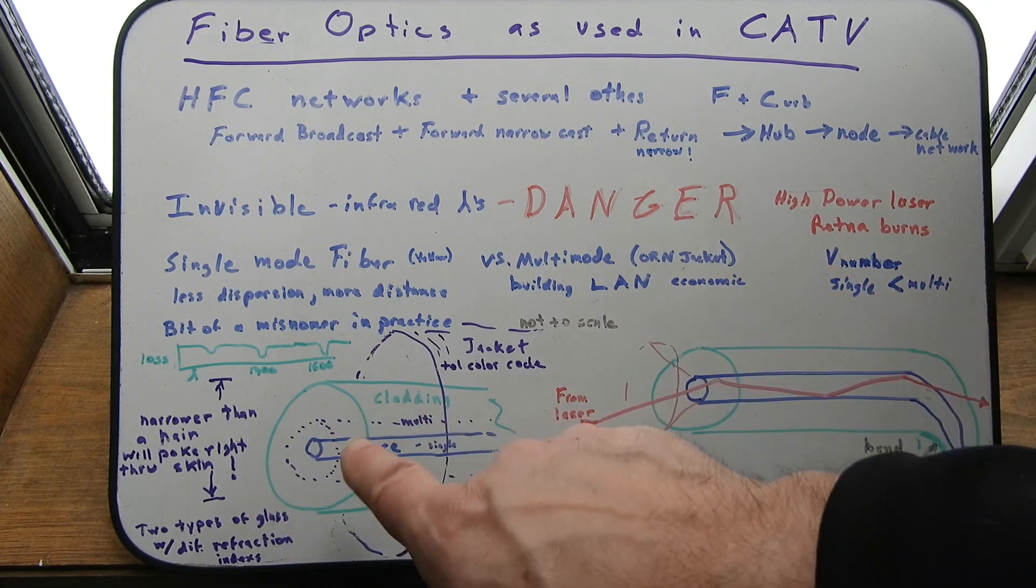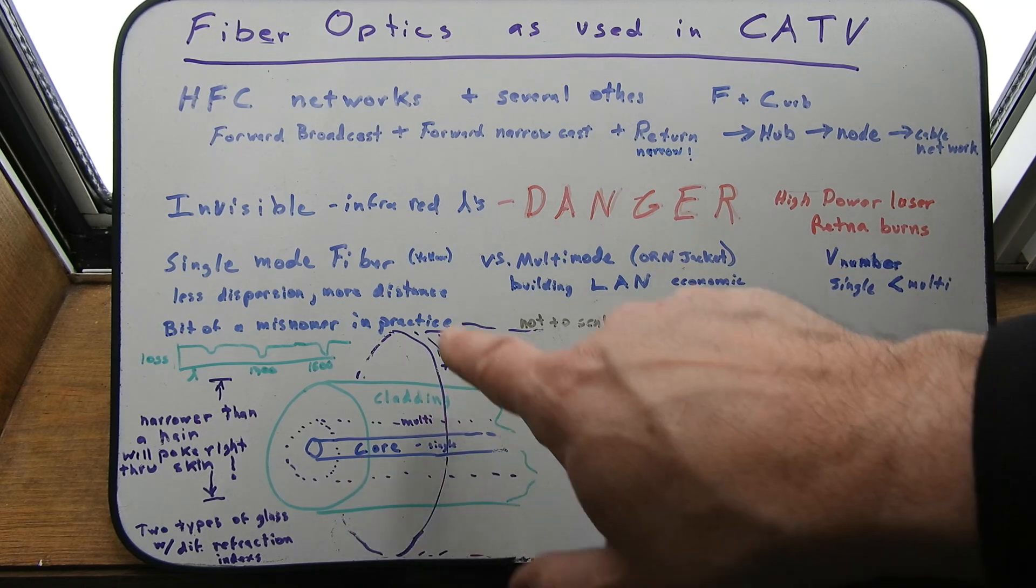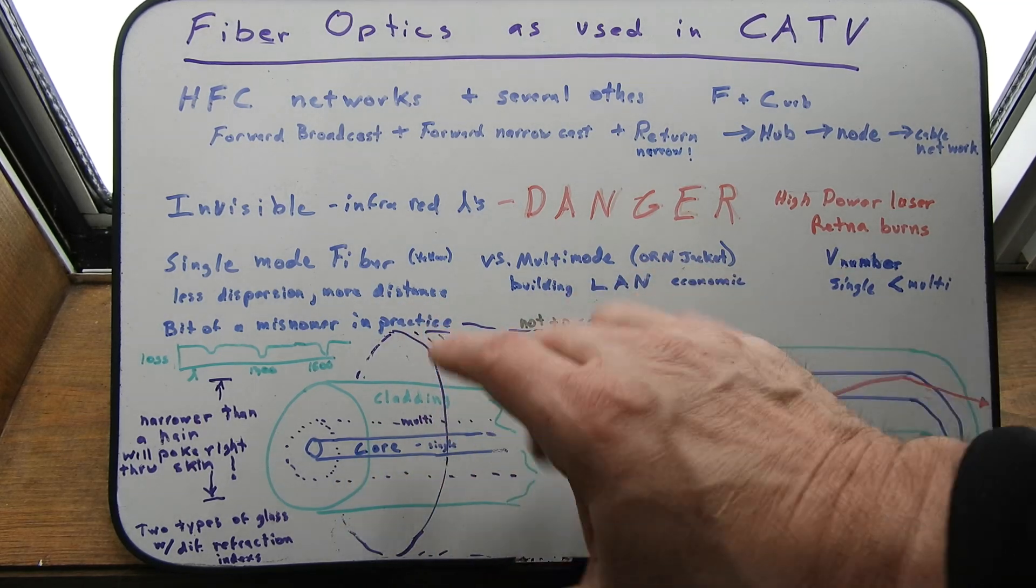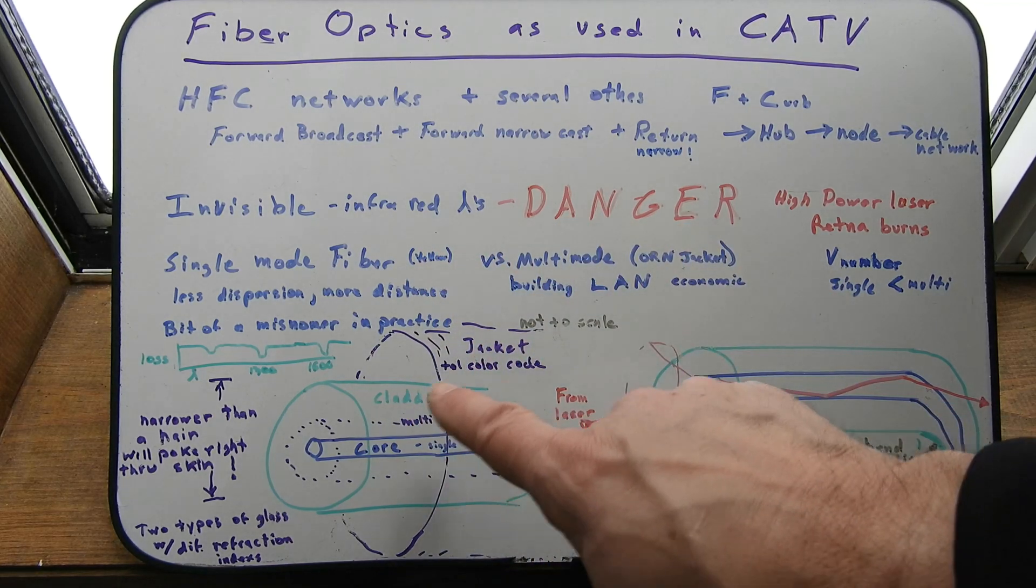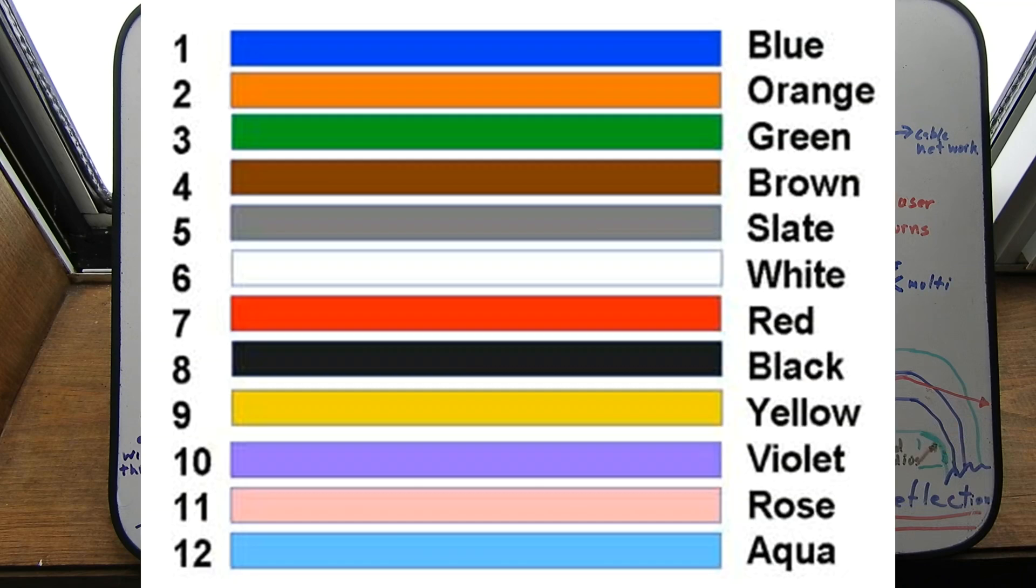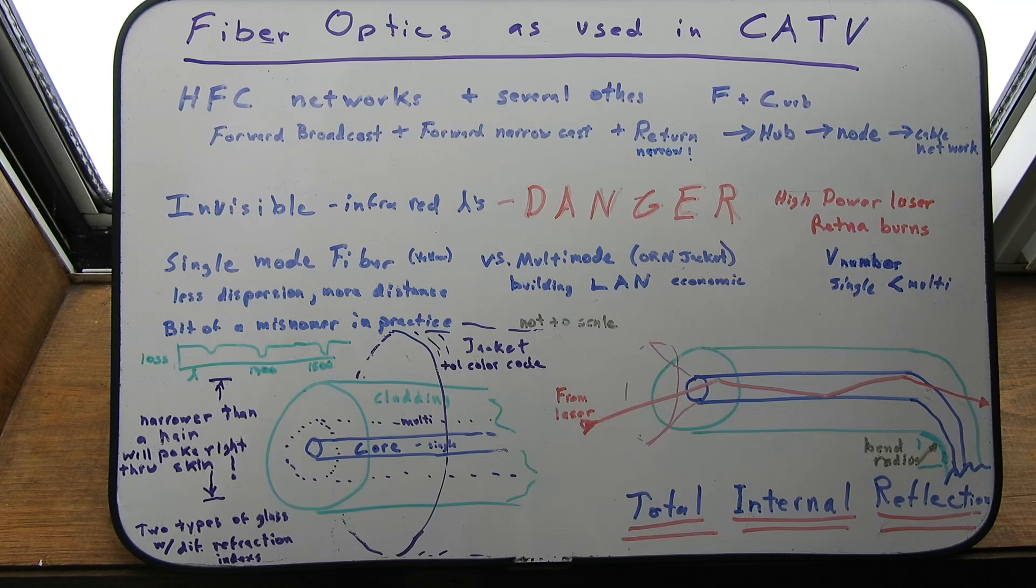So that's a danger issue with dealing with fiber. The stripped down fiber, you know, absent the jacket. This jacket isn't to scale. The jacket would actually be even bigger to scale. And the jacket's what carries the color code. They use telephone color codes. Which are bigger than electrical resistor color codes. It's got more numbers to it. More colors to it.